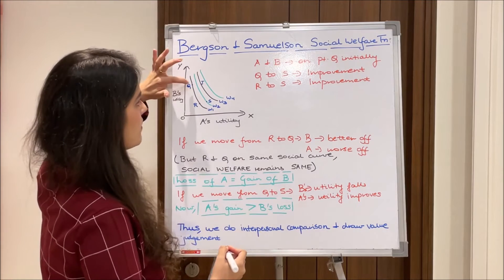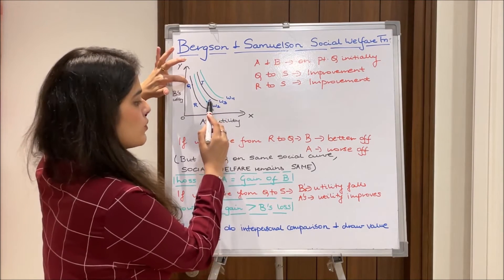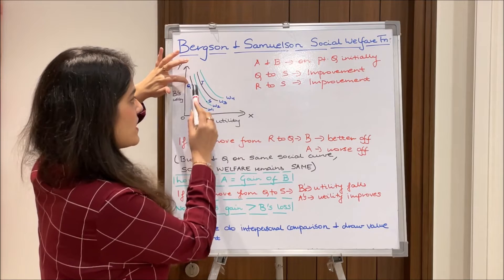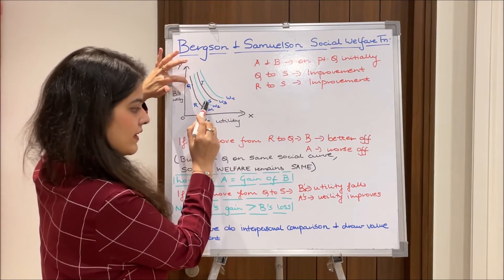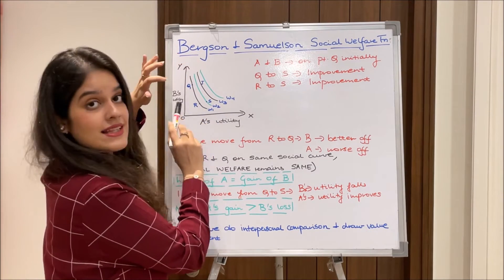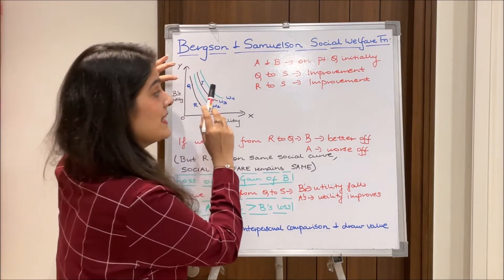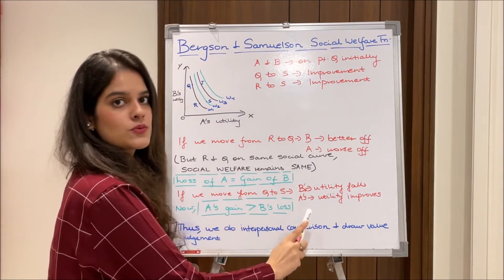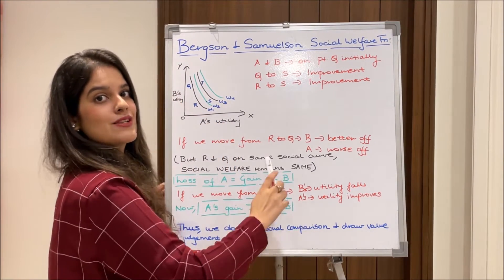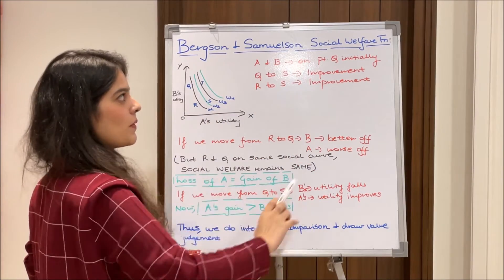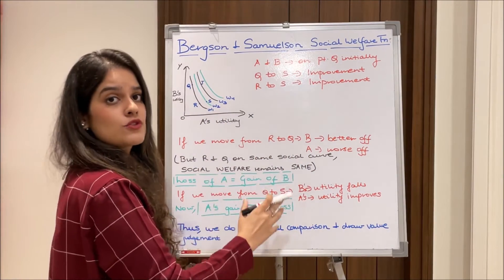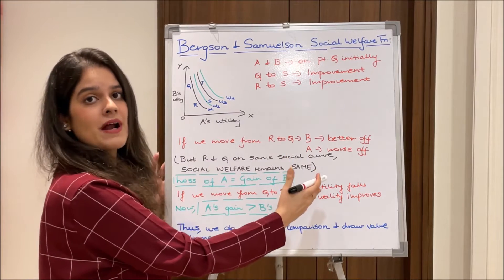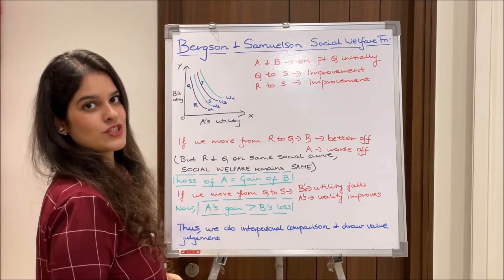Another situation: if we move from Q to S, B's utility will be falling whereas A's utility has increased. Here, A's gain is much more than B's loss. This is the crux of Bergson and Samuelson's social welfare function — we are doing interpersonal comparisons and thus drawing value judgments.